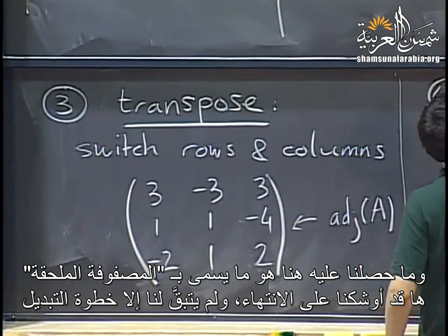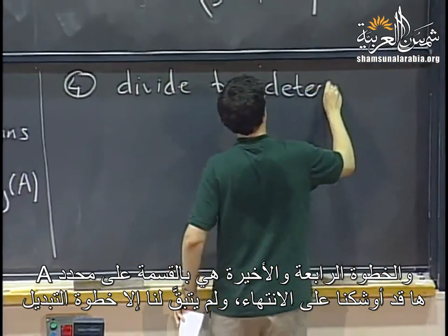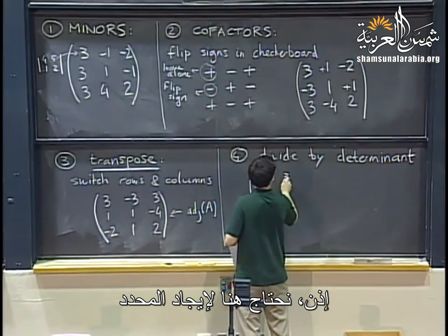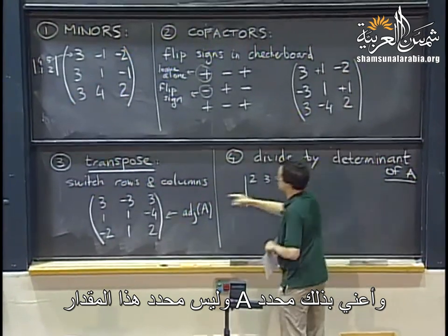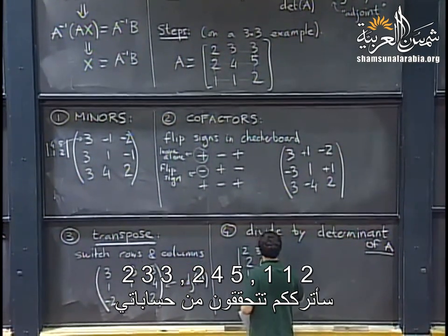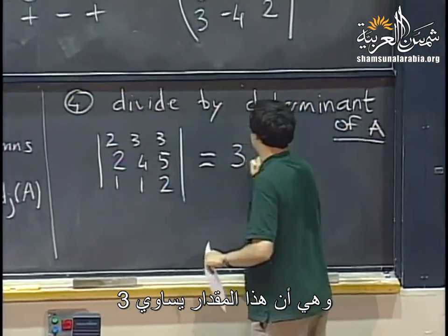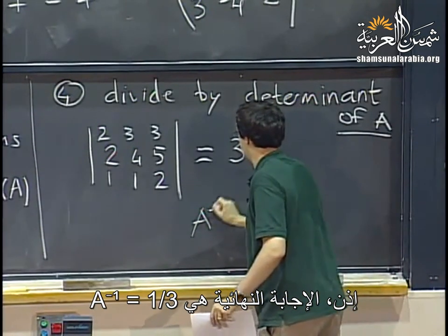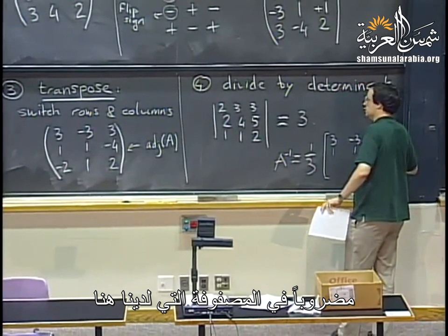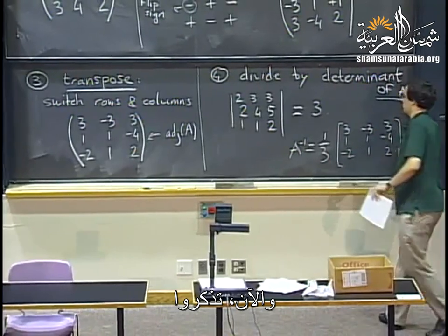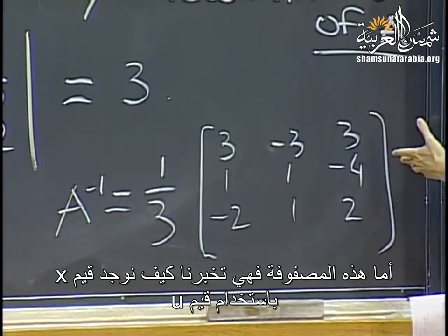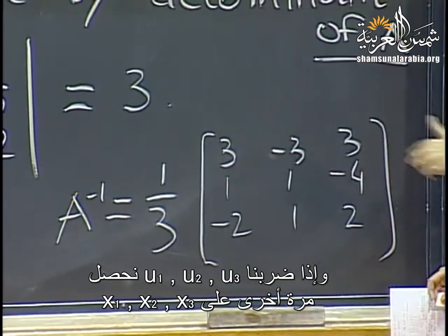Step 4: divide by the determinant of A. Computing det(A) for A = [2,3,3; 2,4,5; 1,1,2] gives 3. So A⁻¹ = (1/3)·[3,-3,3; 1,1,-4; -2,1,2]. This tells us how to express x in terms of u: multiply (u1,u2,u3) by A⁻¹ to recover (x1,x2,x3). It also solves any linear system A·x = b directly.